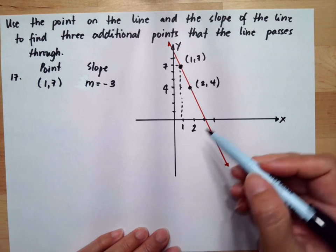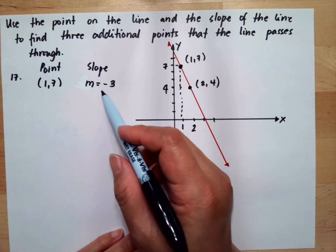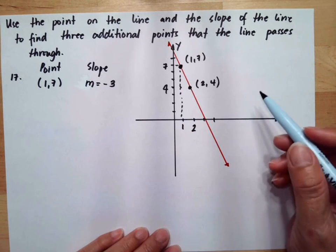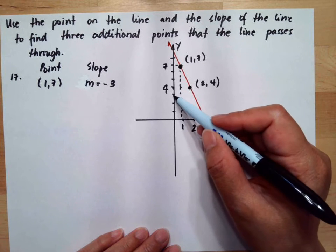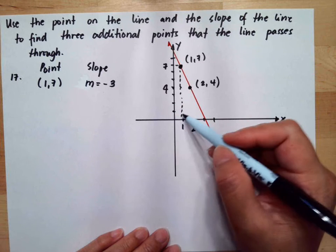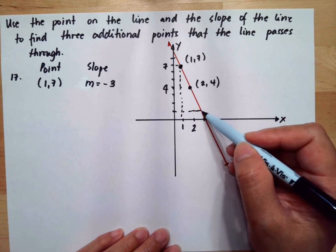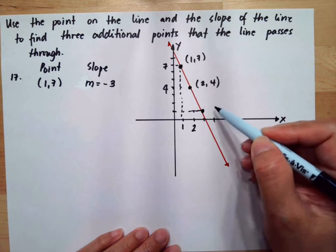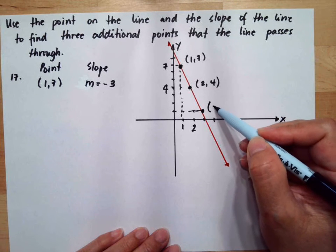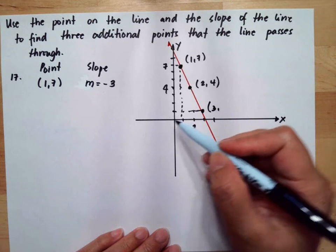So the other way that we can do is we use the slope to identify other points. So we need to go down three steps from here, 1, 2, 3, because the slope is negative 3. And one from 2 is 3, so we can say this is (3,1).